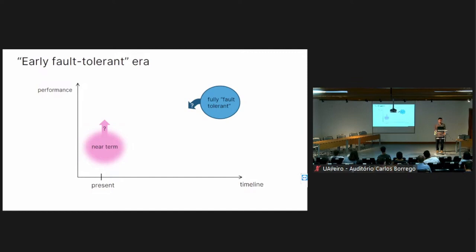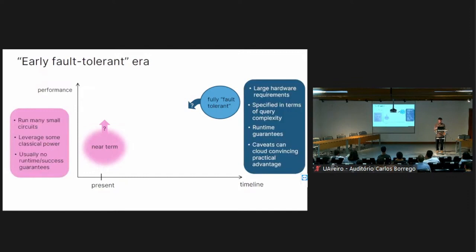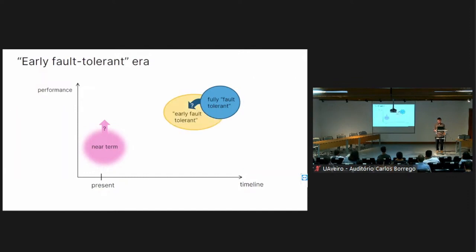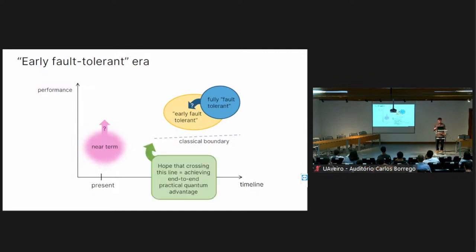There can be caveats that cloud convincing practical advantage for many problems these algorithms are applied to. To bridge this gap, one might ask: can we take fully fault-tolerant algorithms and shave down the resource costs? We might even allow a small dip in performance if it really brings down hardware requirements, drawing ideas from both regimes — this motivates searching for algorithms in the early fault-tolerant regime, hopefully still above some classical boundary corresponding to practical advantage.